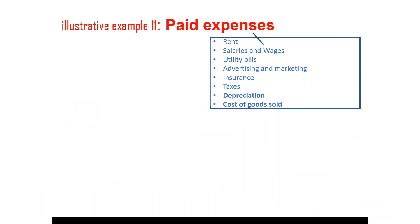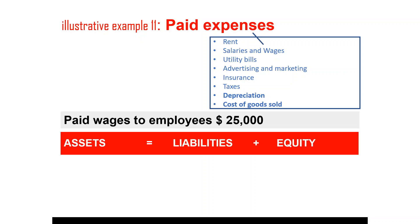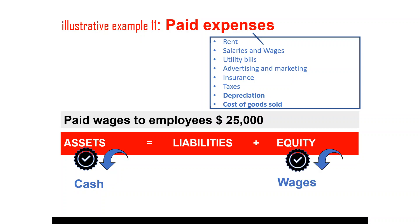Let's move to expenses, which could include rent, salaries and wages, utility bills, advertising and marketing, insurance, taxes, depreciation, and cost of goods sold. For paid wages to employees amounting to $25,000: since it is a cash payment, the cash asset goes down, and expenses result in decreasing the equity. If the payment has not been made, we record it as a liability because it is an obligation to pay — we call it accrued expenses. We will look at those advanced transactions in our next tutorial.